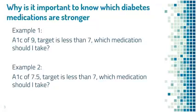Why is it important to know which diabetes medications are stronger? In the first example, this person has an A1C of 9 and the target is less than 7. So which medication should you take? If you do not know what A1C is, please go to hmf-diabetes.com and look it up.